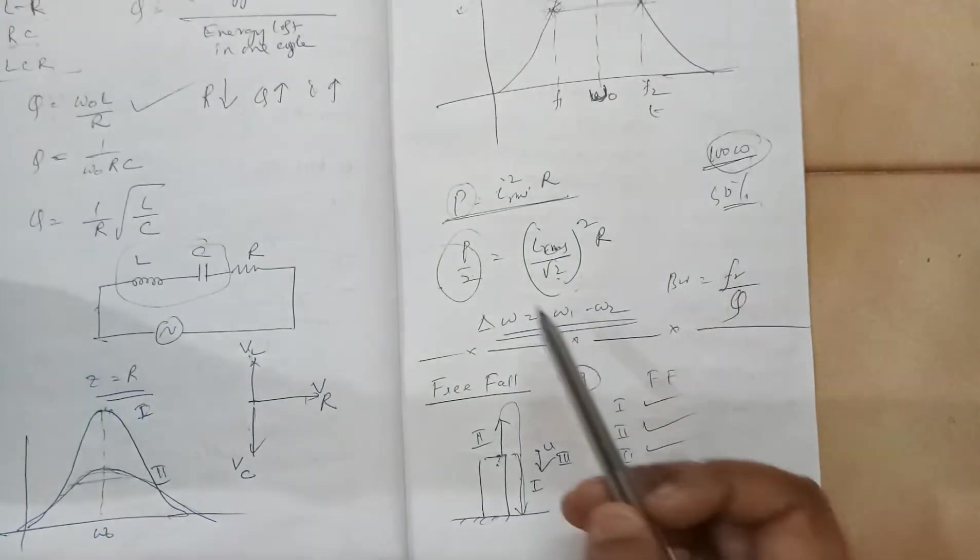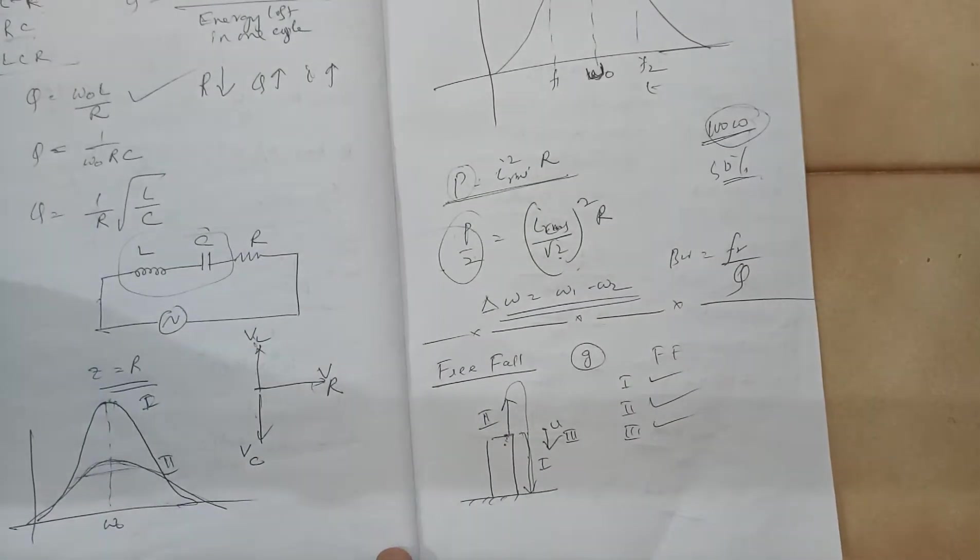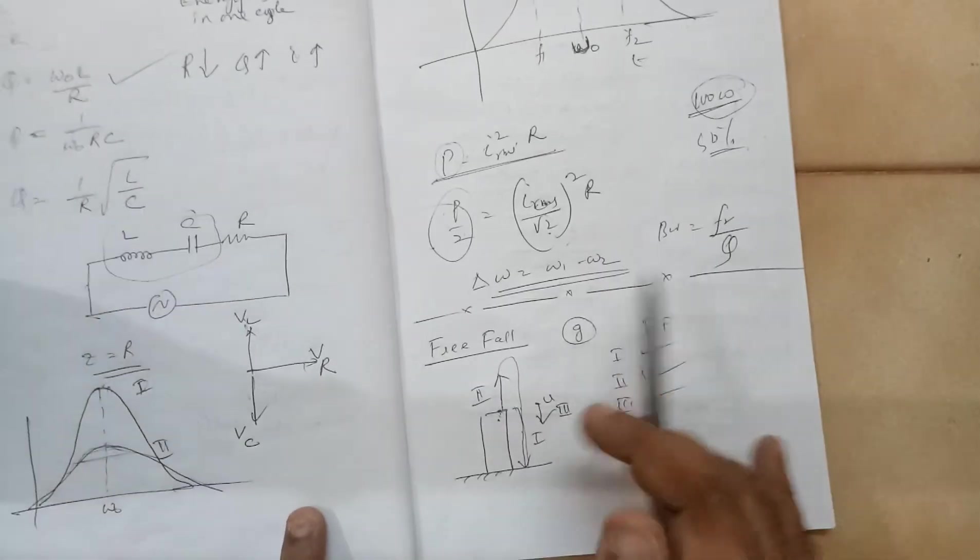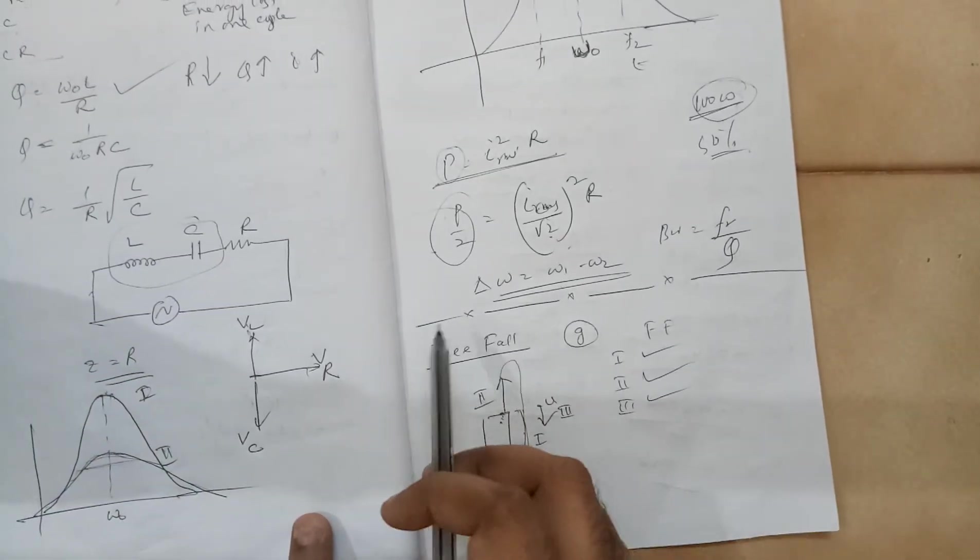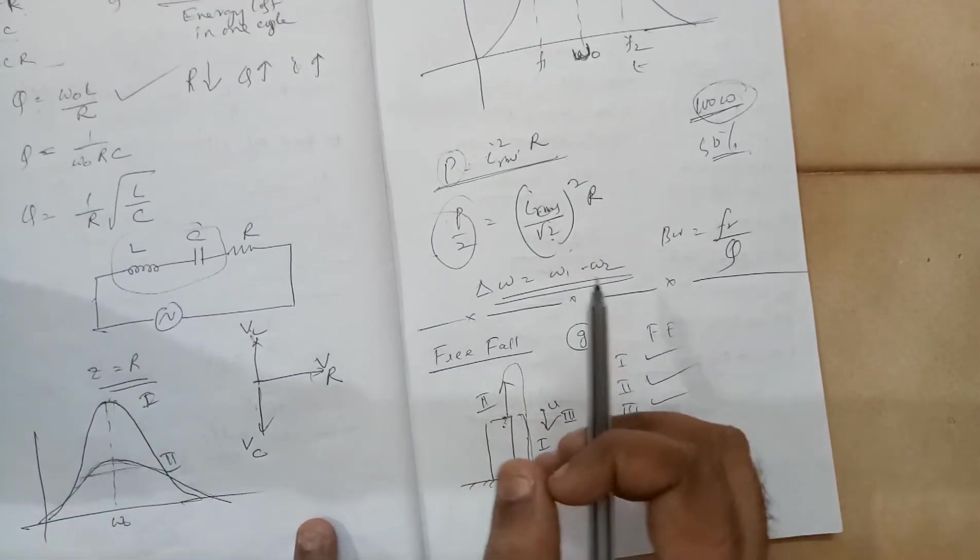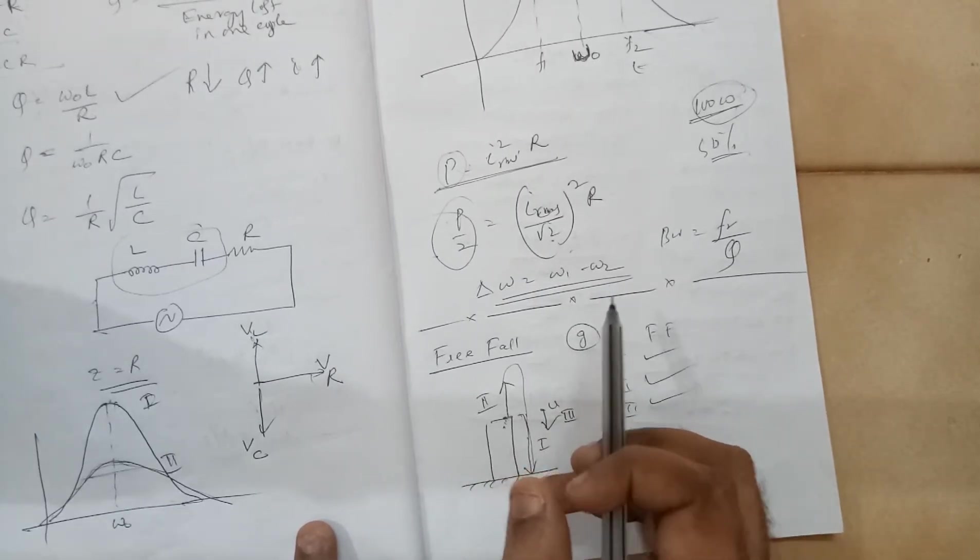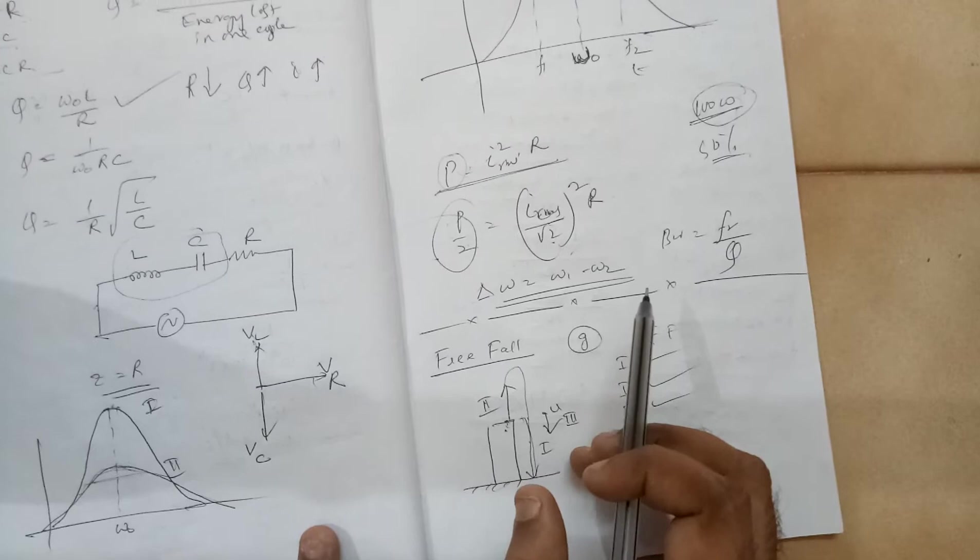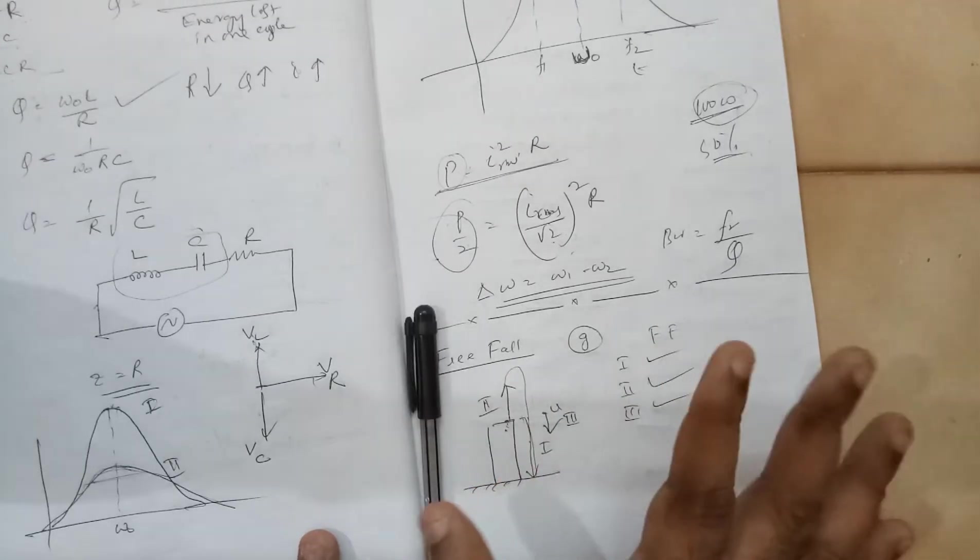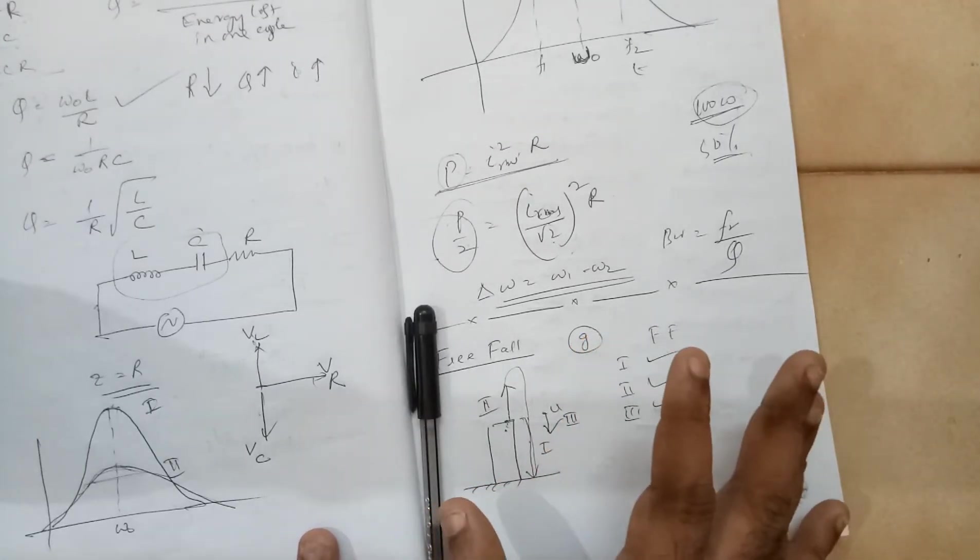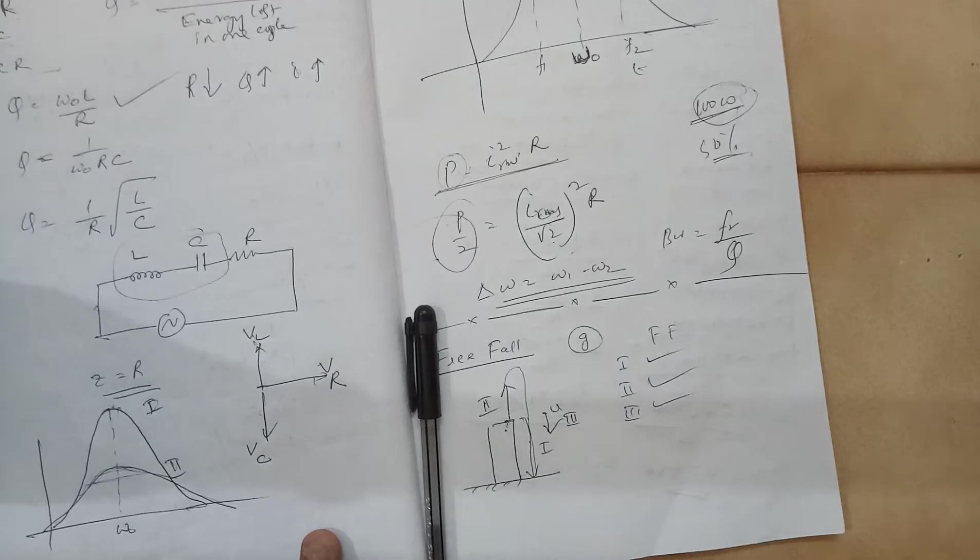Let us now discuss about free fall. Basically, the meaning of free fall is the motion of an object which is under the direct influence of acceleration due to gravity.